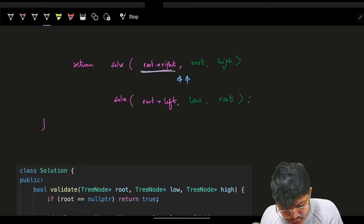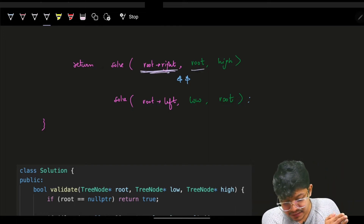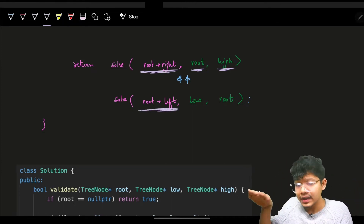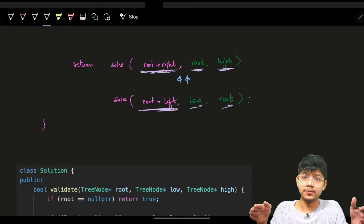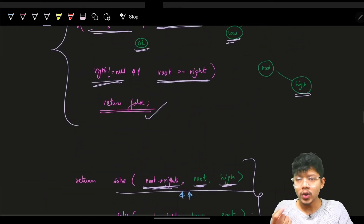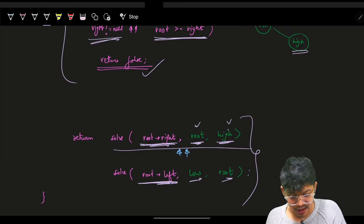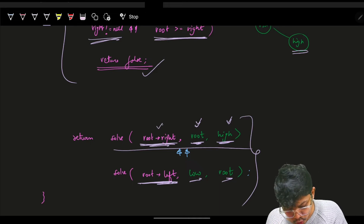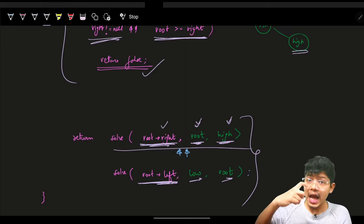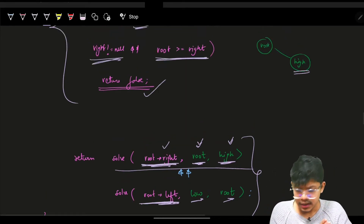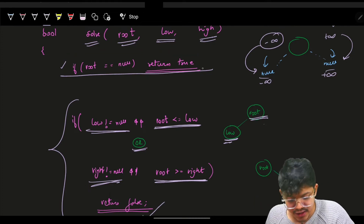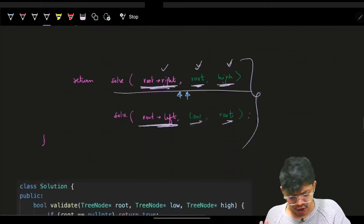If this condition is not triggered, it is valid for that node. Then go and solve for the right subtree, passing root as the new low value and high as the high value. Solve for the left subtree, passing low as the low value and root as the new high value. When we trace the path, ultimately root right will be null, and when root is null we return true.